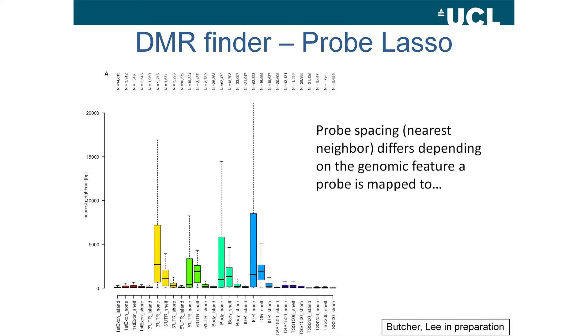The window is feature-oriented and dynamic, depending on the features that the actual probes are located in. It calculates the probe spacing for each probe depending on the feature it's located in. The probe spacing is study-dependent because you might have filtered out several probes in the pre-processing steps - failed probes, sex chromosomes, and probes with potential polymorphisms from the 1000 Genomes data. The features include first exon, 3' UTR, 5' UTR, body, the intergenic region, and the transcription start site.